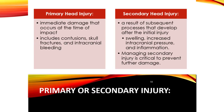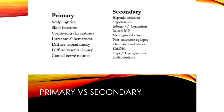Primary injury is the immediate damage, while secondary injury is the result of the response to the primary injury. This classification helps with the understanding of head injuries. Management strategies for the primary injury should be focused on preventing secondary injury.